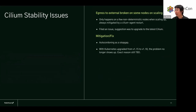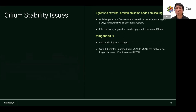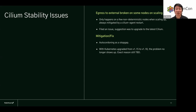Another problem was egress broken on some nodes — it only happened on a few non-deterministic nodes when we scaled up and could always be mitigated by a Cilium agent restart, making it a mystery. We filed an issue to the Cilium community and got the suggestion to update to the latest Cilium version. As a mitigation, we implemented auto-restart for when the problem occurred on a node as a stopgap. Interestingly, with the Kubernetes version update from 1.15 to 1.18, the problem no longer showed up even before we updated the Cilium version — though the exact reason is TBD.